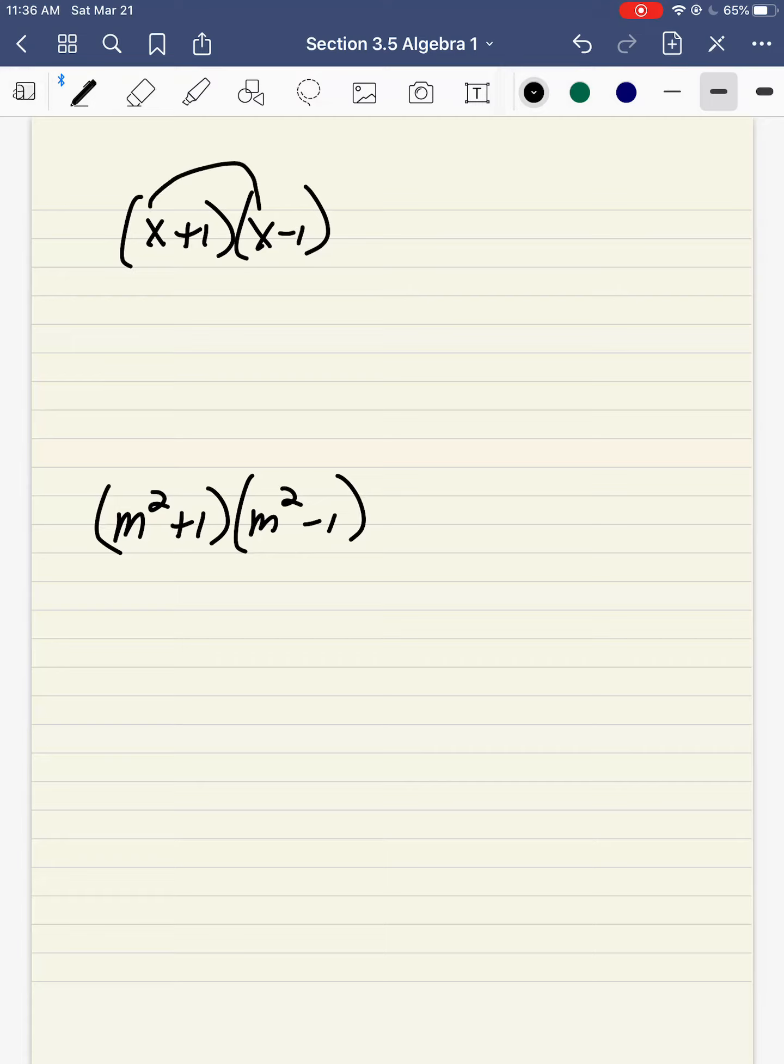This one will do the same thing. x times x is x squared. x times minus 1 is minus x. 1 times x is plus x. 1 times minus 1 is minus 1. Again, the minus x plus x in the middle will make 0. So the final answer is x squared minus 1.